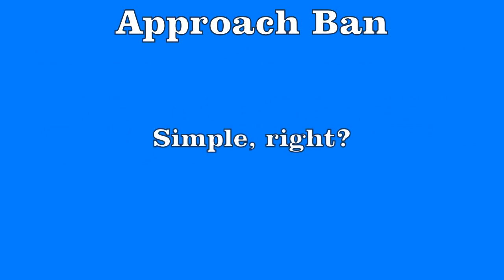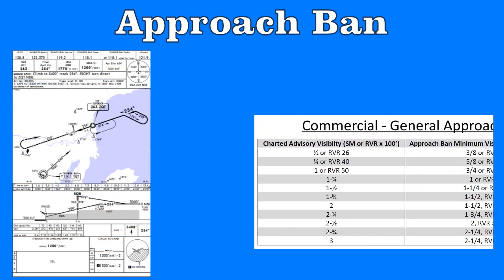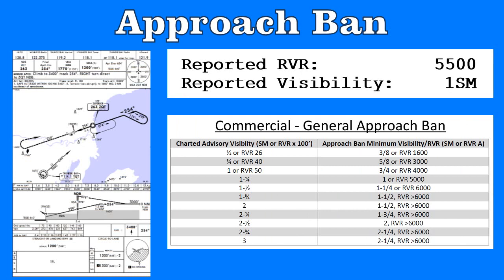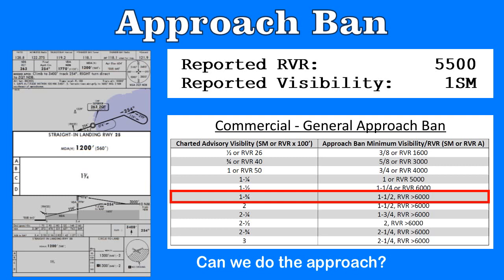Hopefully a few quick examples will help show how to use the approach ban tables. Let's start by considering the NDB at runway 25 here in Thunder Bay, Ontario. Let's say we are a commercial operator without the special OPSPEC approach ban, so just the normal general approach ban. Visibility reported today is 1 mile, RVR 5500. Can we do the approach? A quick look at the approach plate shows the advisory visibility is one and three-quarters miles. We compare this to our approach ban table and see that for one and three-quarters, we must have at least one and a half miles visibility or RVR greater than 6000 to start the approach. Since the RVR and visibility both fall below this value, we cannot do the approach.